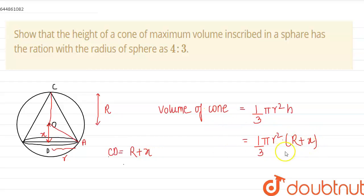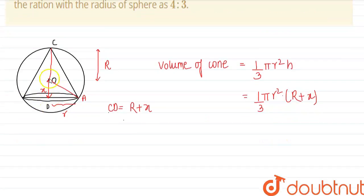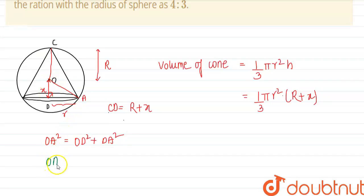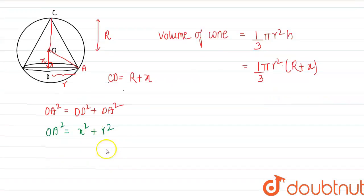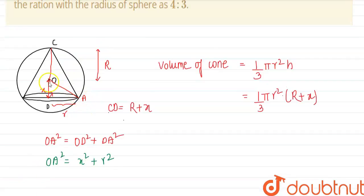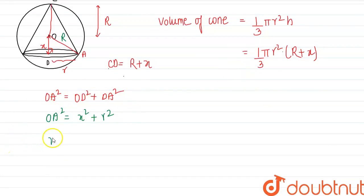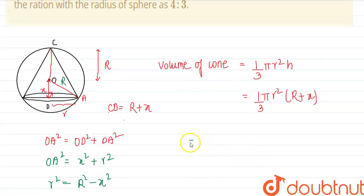To maximize we should have only one variable, so we apply Pythagoras theorem. Taking this triangle, the angle is 90 degrees, so OA² = OD² + DA². From here, OA² = X² + r². Now OA is the radius of the sphere, so OA = R, giving us r² = R² − X². Substituting, the volume of the cone is (1/3)π(R² − X²)(R + X).